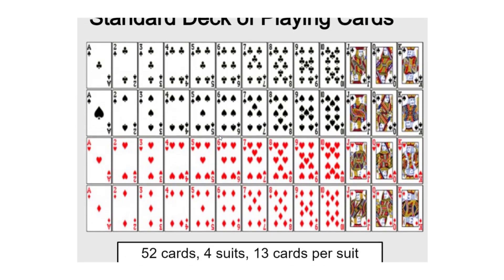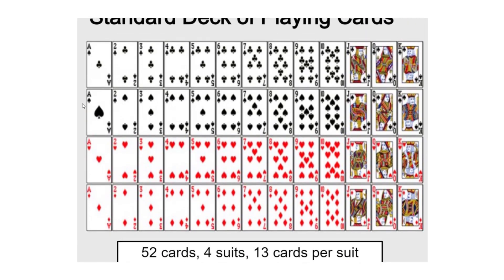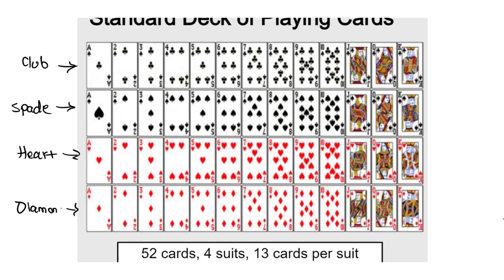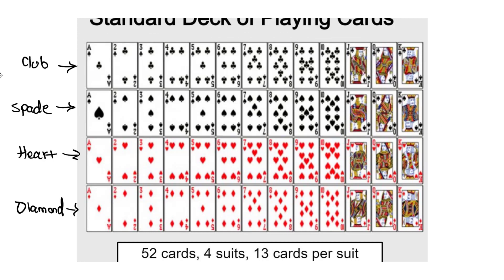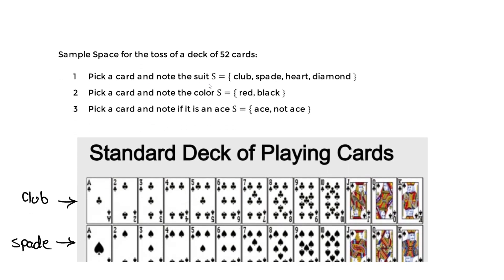Here's a standard deck — we have 52 cards and 4 suits: the club, the spade, the heart, and the diamond. For each category based on suit, there are 13 cards — 13 each. That's what we mean by one sample space, just based on the suit.